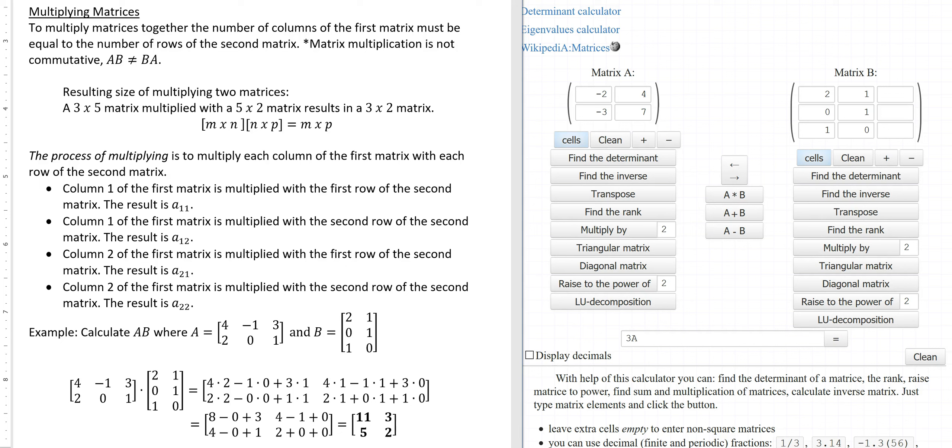Let's take a look at what's been written. To multiply matrices together the number of columns of the first matrix must be equal to the number of rows of the second matrix. And matrix multiplication is not commutative. So matrix A times B is not the same as matrix B times A.